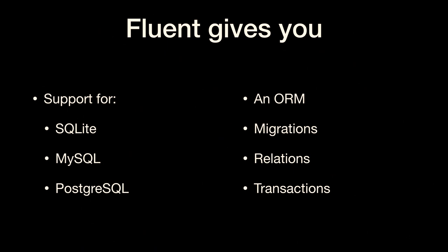With Fluent, your data model is defined by the classes you create — there's nothing fancy. You don't have to write any SQL to create a table; you just create a Swift class. If you change that class, when your program runs next time, it will inspect the class, notice what's been added or deleted, and update the database schema automatically. Any database library that doesn't support migrations, you should just run away from — they want you to do way too much work.